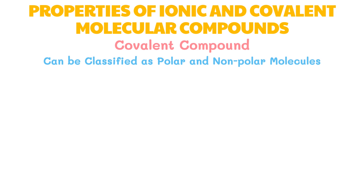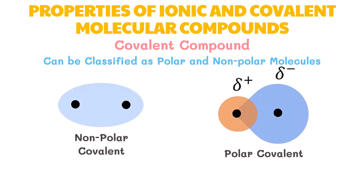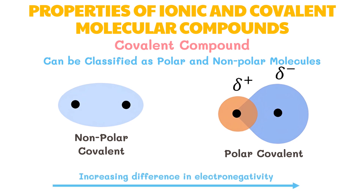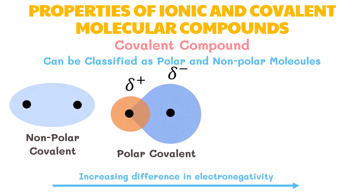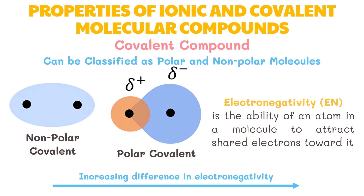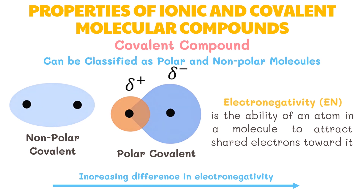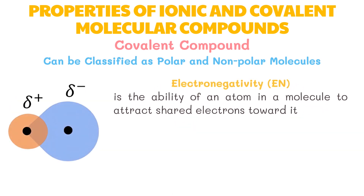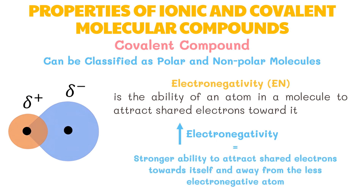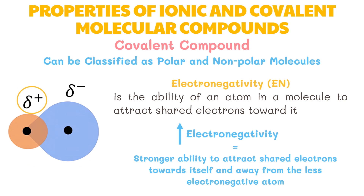Covalent molecular compounds can be polar or nonpolar. The polarity of molecules results from differences in the electronegativity of the bonded atoms. Electronegativity is the ability of an atom in a molecule to attract shared electrons toward itself and away from the less electronegative atom. The electrons are not shared equally, and part of the molecule carries a partial positive charge while the other part carries a slight negative charge, creating a dipole.